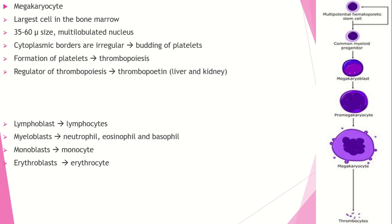Thrombopoiesis is regulated by the hormone thrombopoietin, which is produced from the liver and kidneys. The other options: lymphoblasts give rise to lymphocytes, myeloblasts give rise to neutrophils and basophils, monoblasts give rise to monocytes, and erythroblasts give rise to erythrocytes.